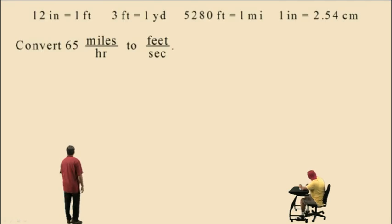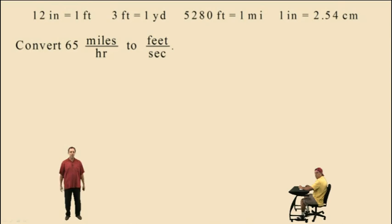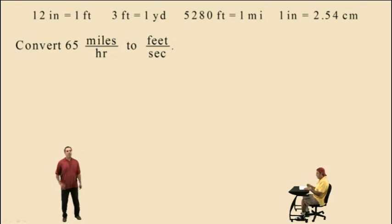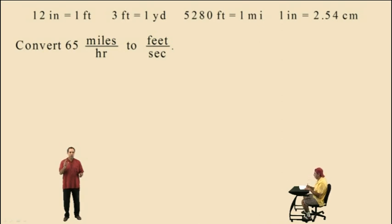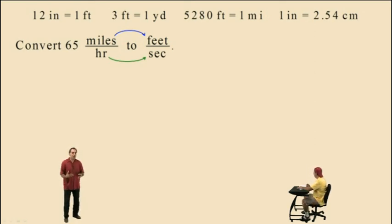Let's do another one: convert 65 miles per hour to feet per second. In this problem, we are given a rate — 65 miles per hour. This is slightly different because we're converting from one rate to another rate, meaning we have to convert two dimensions in one problem. We have to convert miles to feet, but we also have to convert hours to seconds. Notice hours are given in the denominator, so that's going to affect the way we arrange our conversion factors.